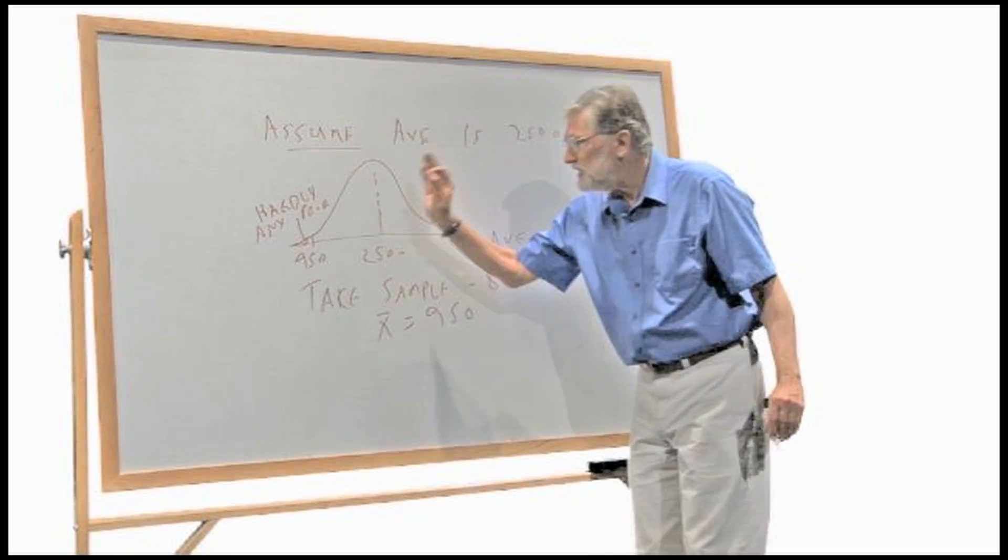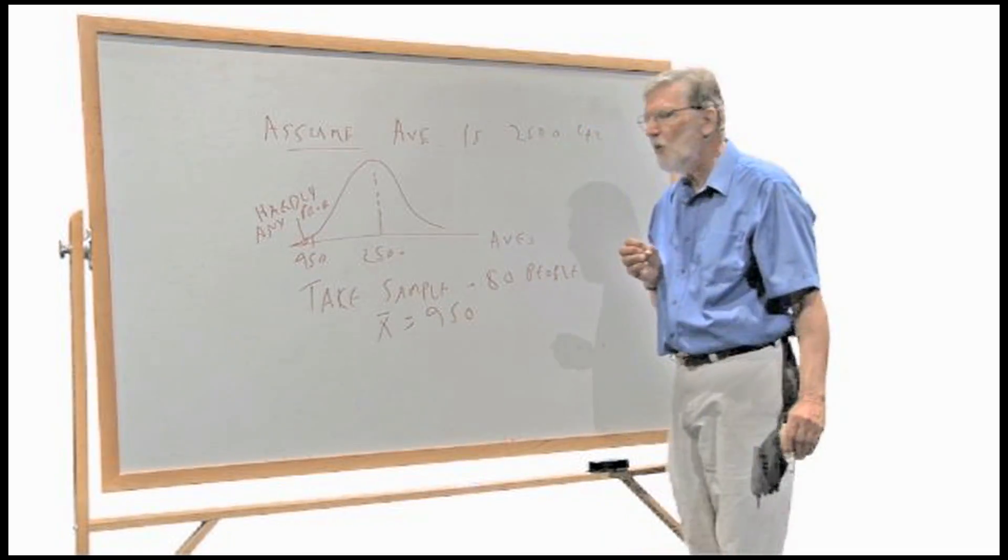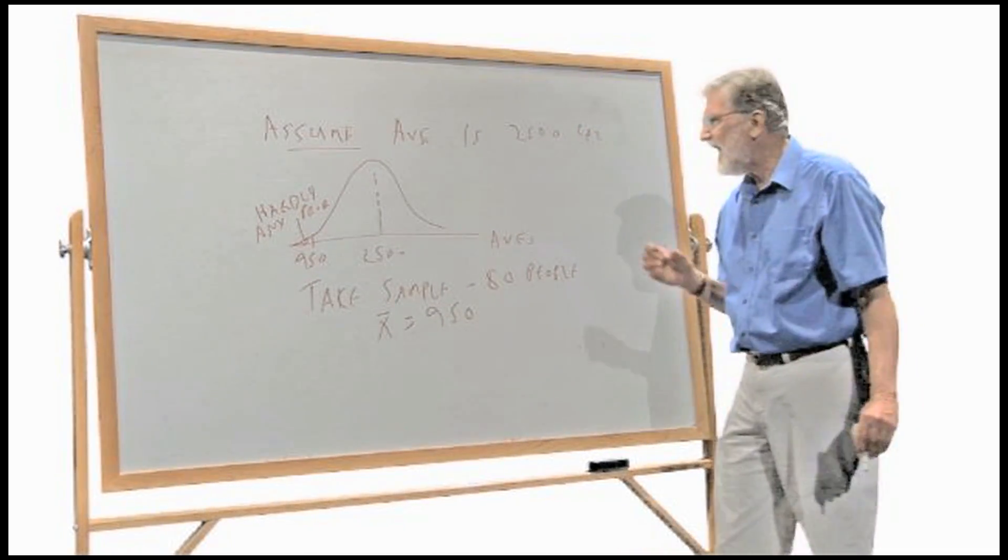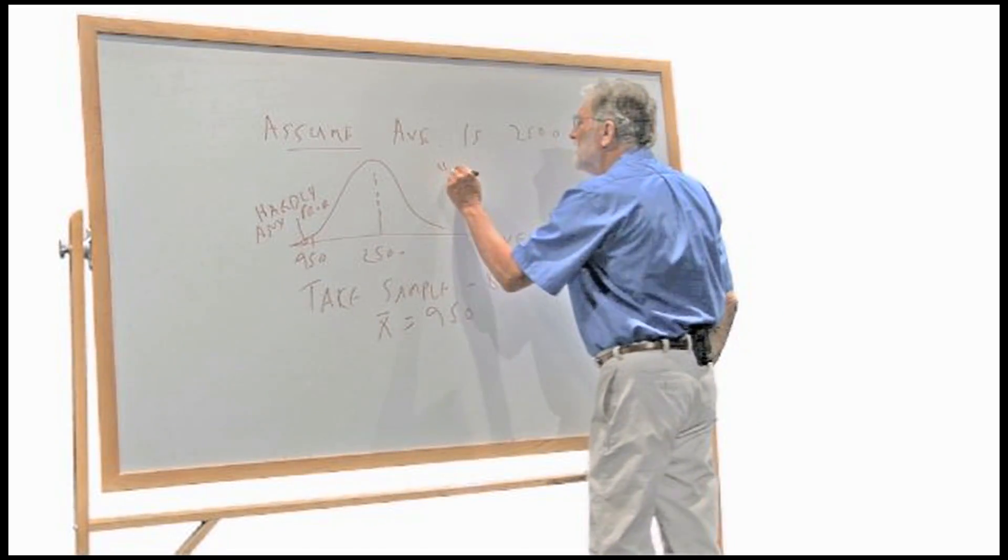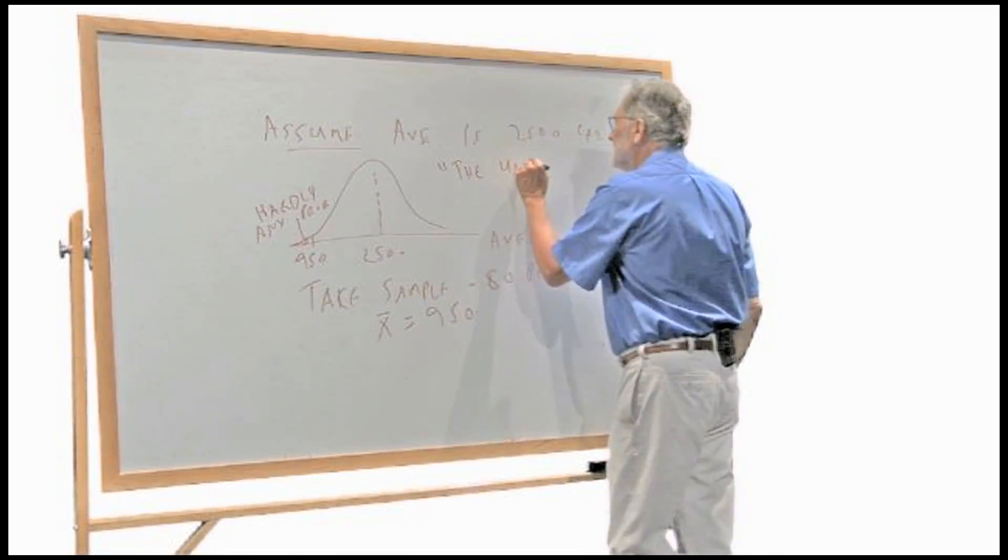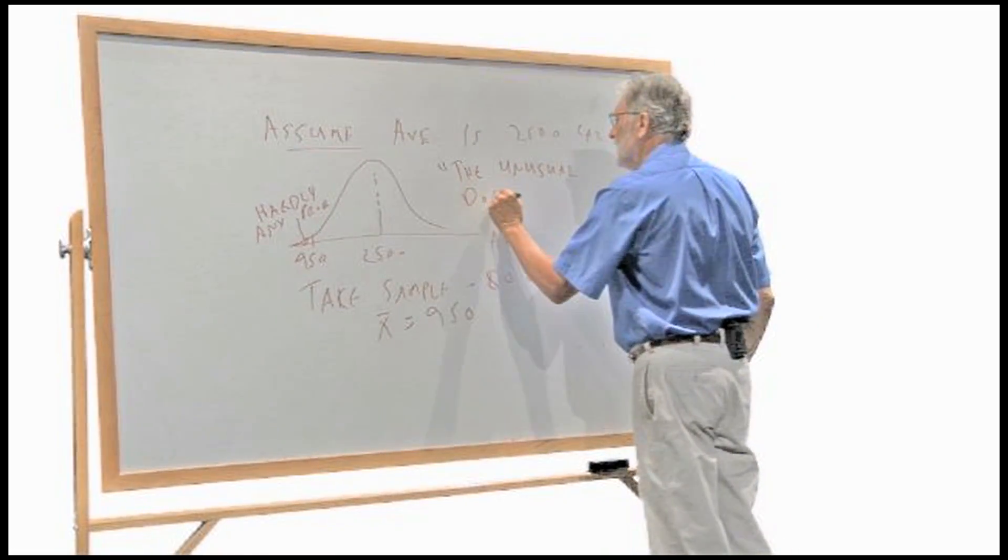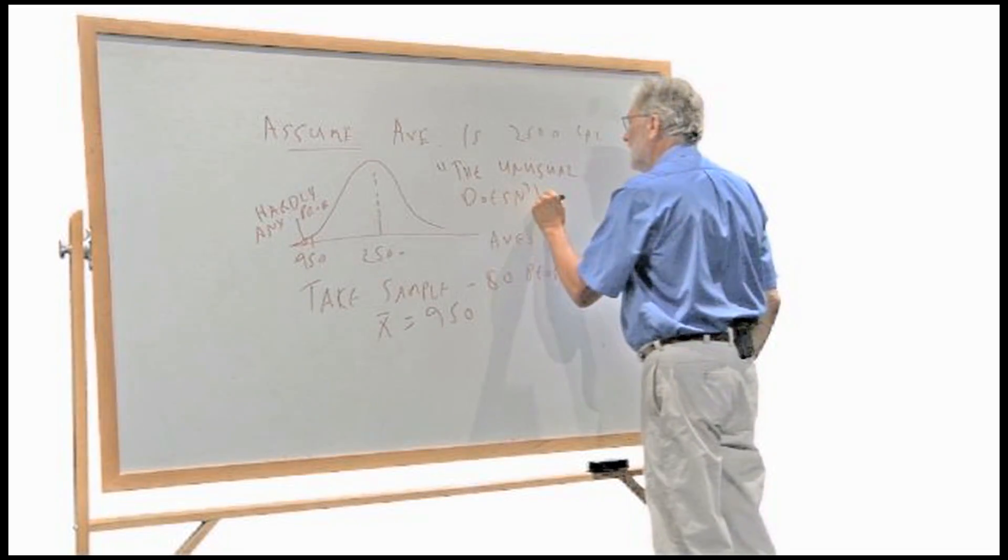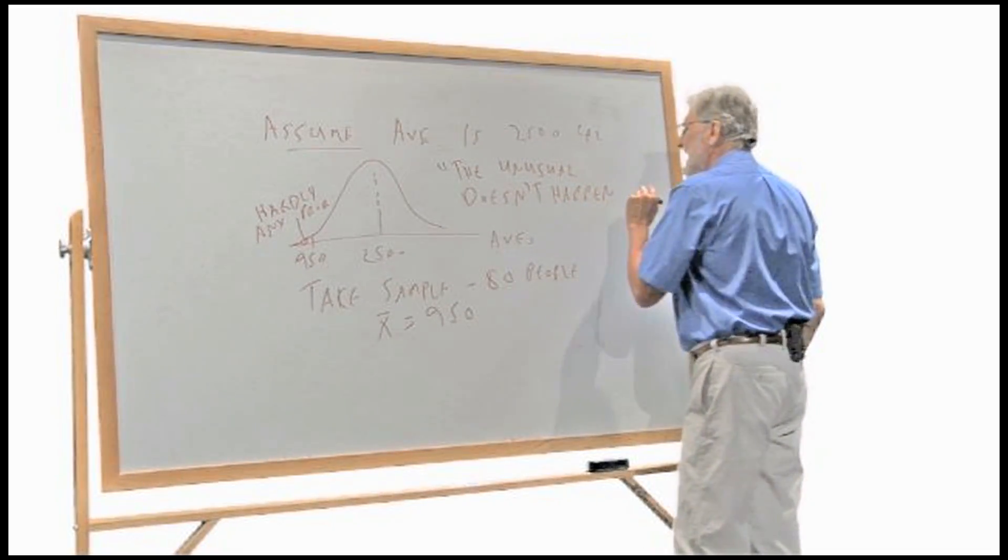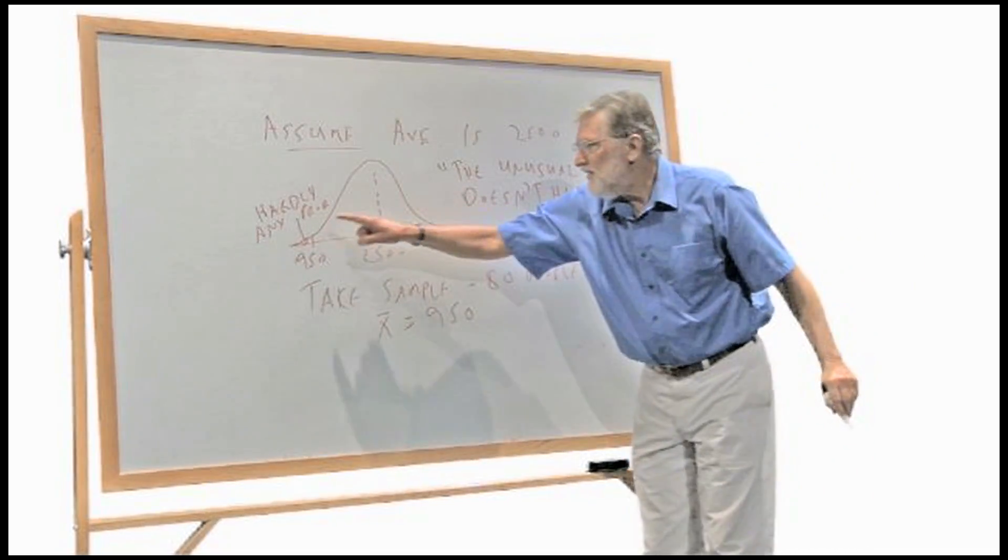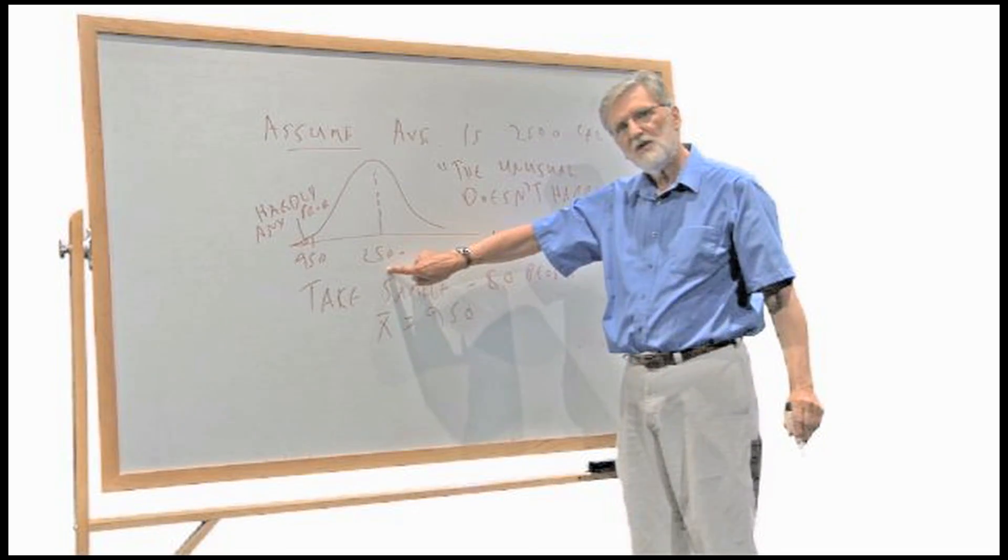So we could say, yeah, we saw something unusual, wasn't that fun. But statisticians don't work that way. Statisticians assume that the unusual doesn't happen. What they say is, you only think this is unusual because you think you're on this curve.